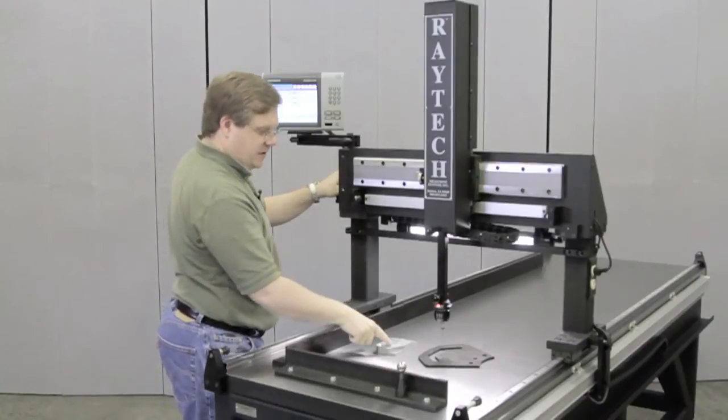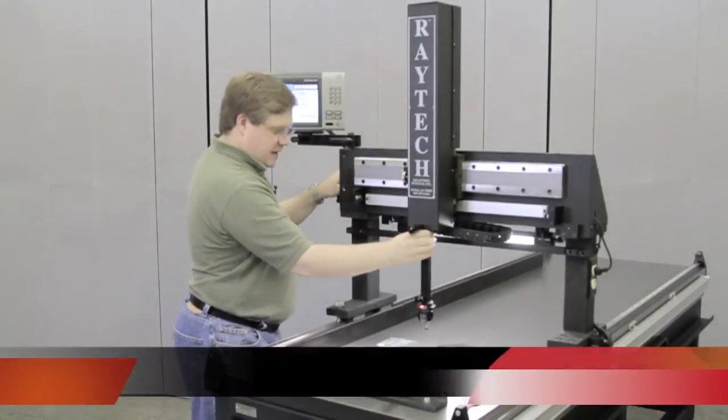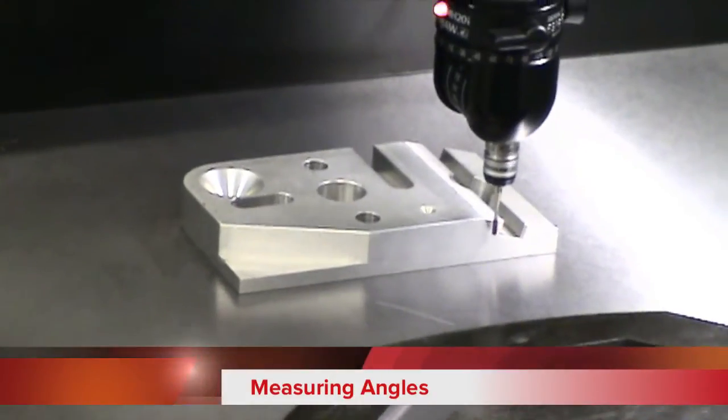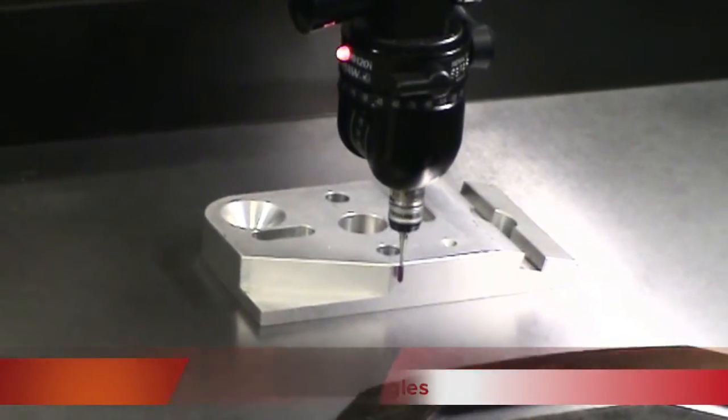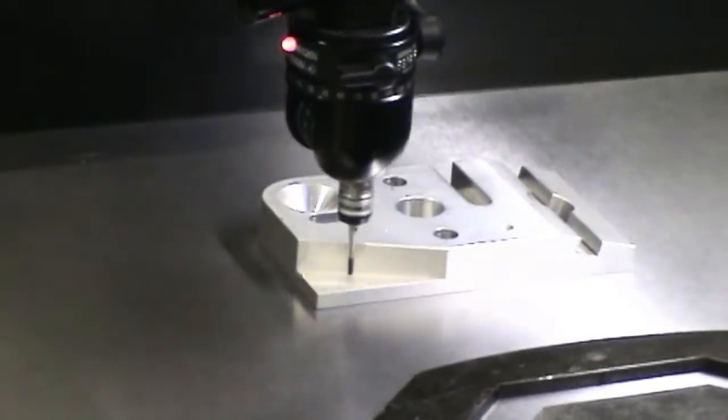To measure an angle on the part, we can come down and probe one edge of the angle, then we'll come in and probe the other edge of the angle.